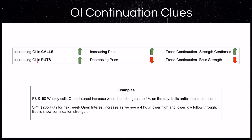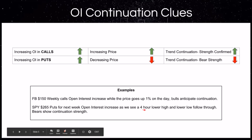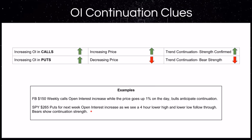If the open interest in puts is going up and the price is decreasing, that shows trend continuation and bear strength, because contracts are being created, puts are being bought, and the price is going down at the same time. For example, SPY $265 puts for next week — the open interest increases as we see a four-hour lower high and lower low follow-through to new lows. Bears show continuation strength because these contracts are not closing out; they're seeing continuation of increasing positions and further contracts are being created.